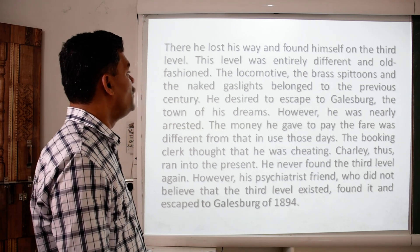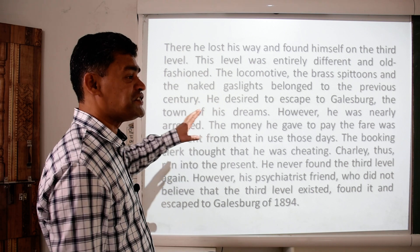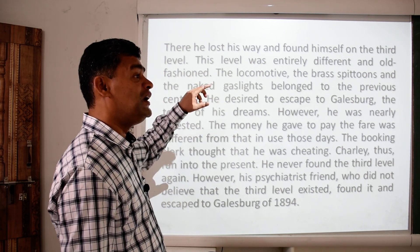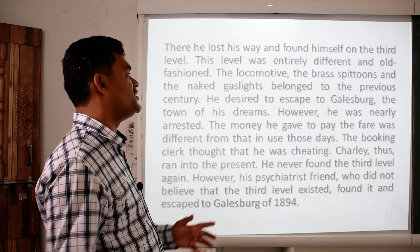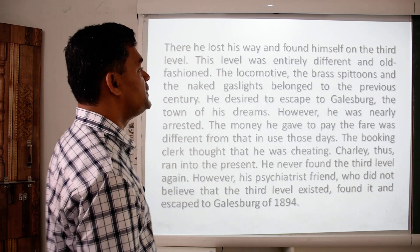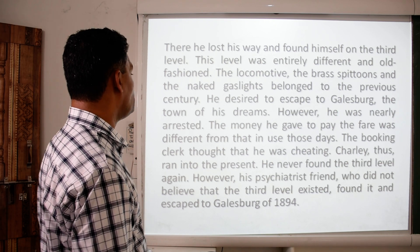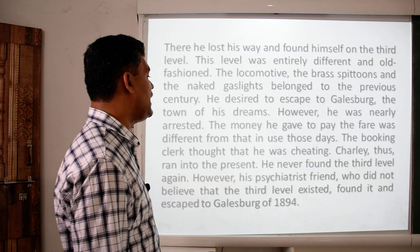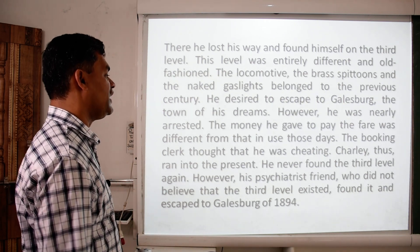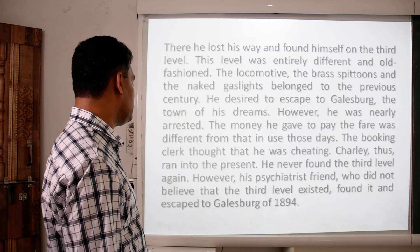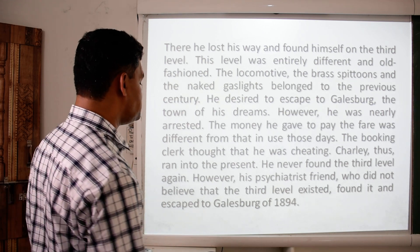There he lost his way and found himself on the third level. This level was entirely different and old-fashioned — the locomotive, the brass spittoons, and the naked gas lights belonged to the previous century. He desired to escape to Galesburg, the town of his dreams. However, he was nearly arrested — the money he gave to pay the fare was different from that in use in those days, and the booking clerk thought he was cheating. Charlie ran back into the present and never found the third level again.